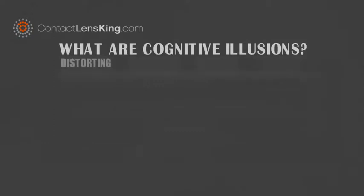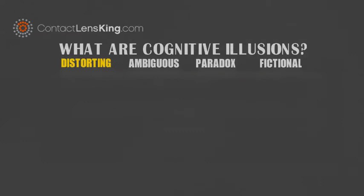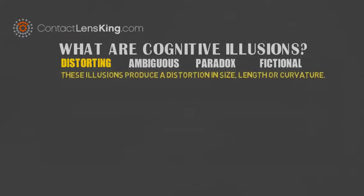These types of illusions may belong to one of four categories of cognitive illusions. The first category consists of distorting illusions. These illusions produce distortions in size, length, or the curvature of images.